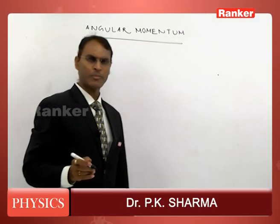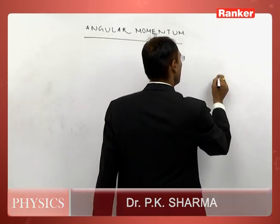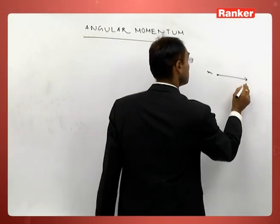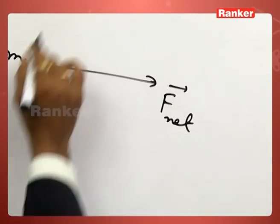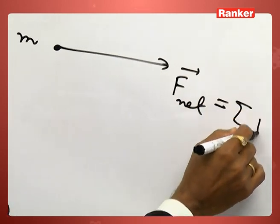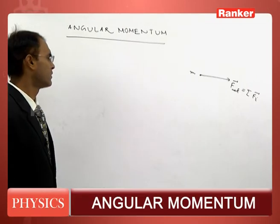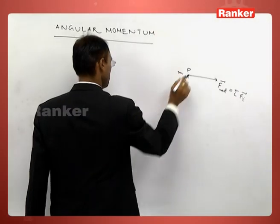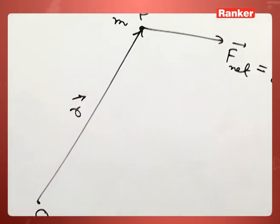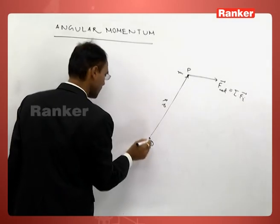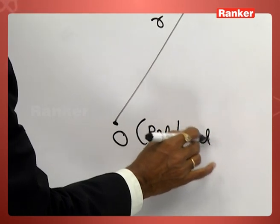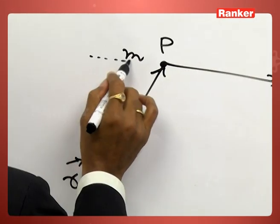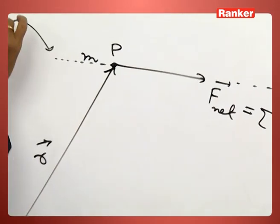Using the idea of the previous example, when many forces act at a point or a particle or a point mass, the sum of all the forces is equal to the net force. This is the reference point. R is the position vector of this point mass with respect to the reference point about which you are going to calculate the torque. The line along which the net force acts is called the line of action.